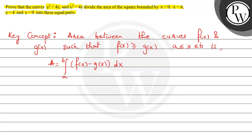Now, with the help of this key concept, let's start our solution. In this question we have 2 curves: one is y squared equals 4x and the second is x squared equals 4y. The other boundary conditions given are x equals 0, x equals 4, y equals 0, and y equals 4. Now let's try to construct the graph.